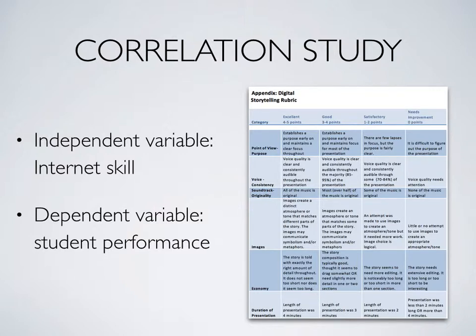I have chosen a correlation study to provide a view of the situation. This strategy was chosen to establish the strength of the relationship between Internet skill and student performance. The purpose of the study is to see if a relationship is indicated between Internet skills and student performance. Furthermore, the data will be used to determine if there is a difference in performance between students with Internet skills and those without.